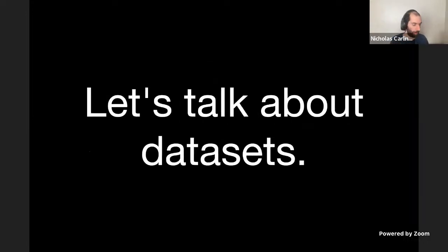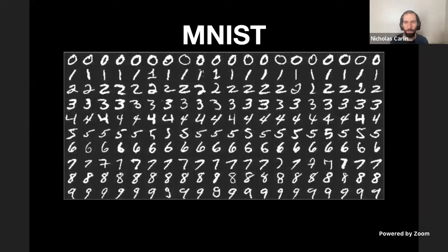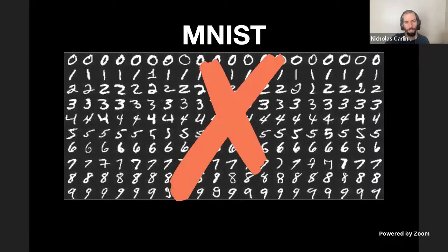Before I get to that, let's talk for a minute about datasets and what people use to train machine learning models. Suppose you wanted to train a new state-of-the-art model. If it was the 90s or early 2000s, maybe you'd use MNIST — 50,000 images, handwritten digits, 28 by 28. But no one today would train a state-of-the-art model on MNIST. A little bit later, late 2000s, maybe you'd use CIFAR-10 — 50,000 images, 32 by 32, color, 10 classes — but still very low resolution.